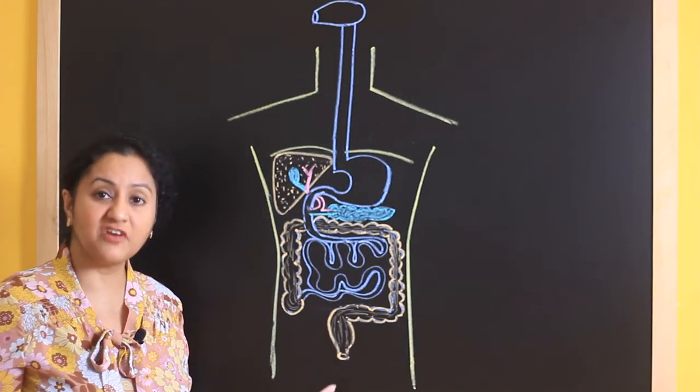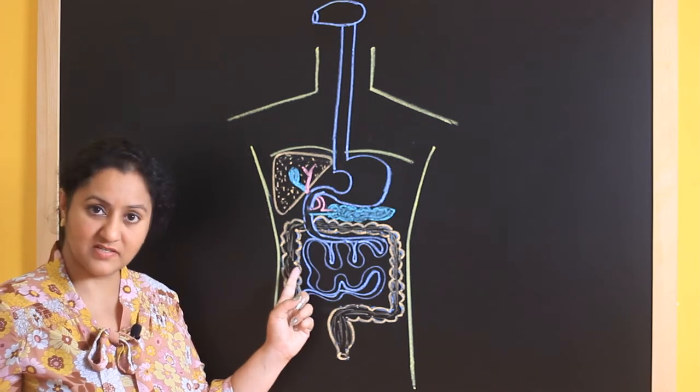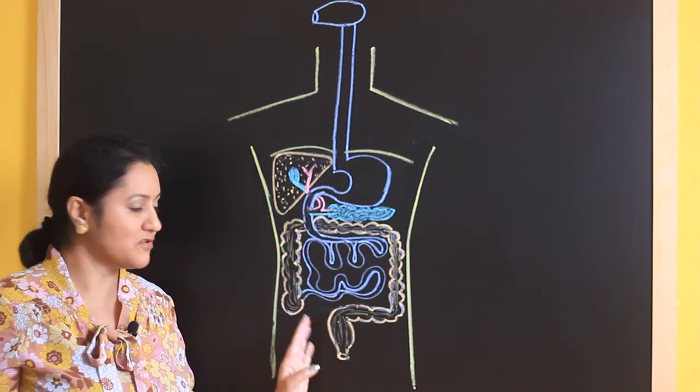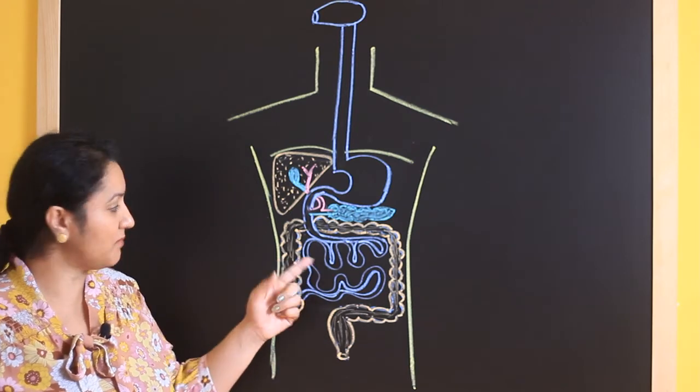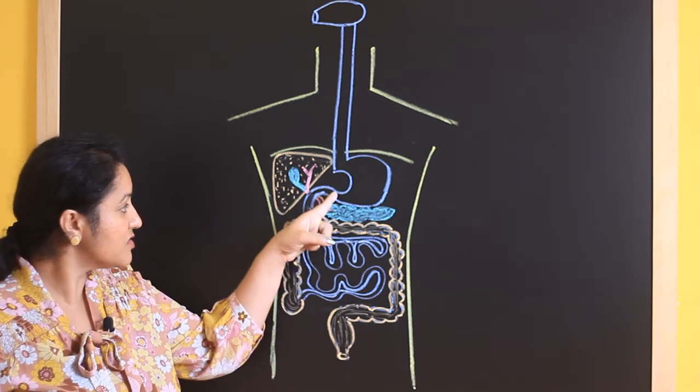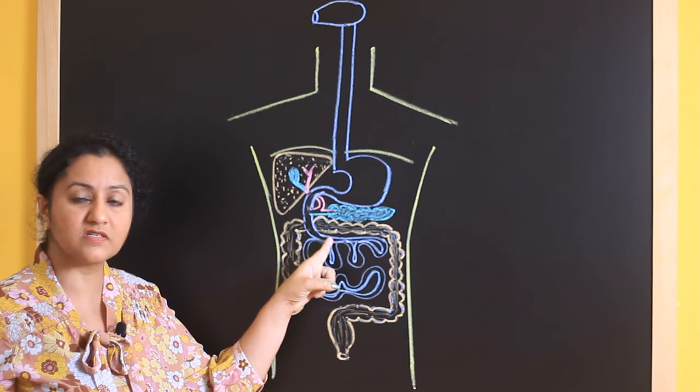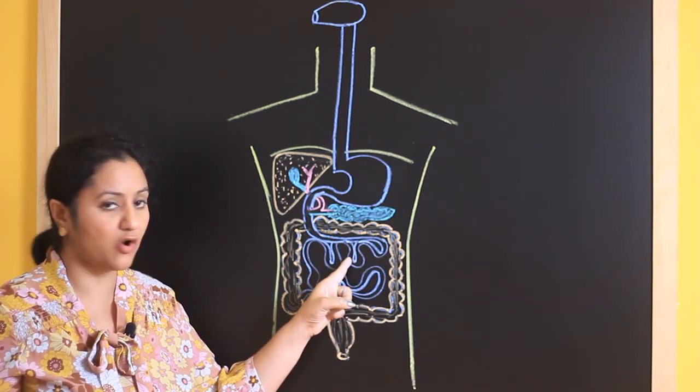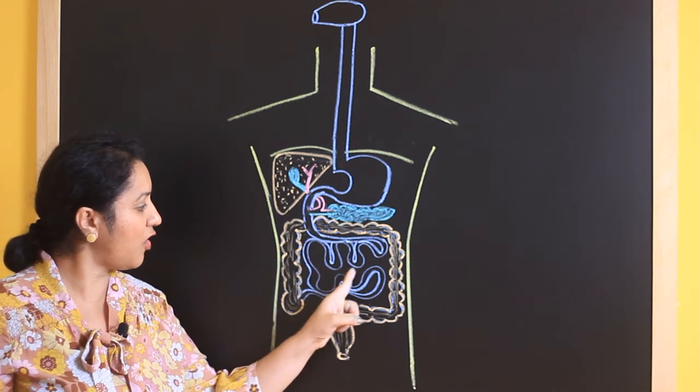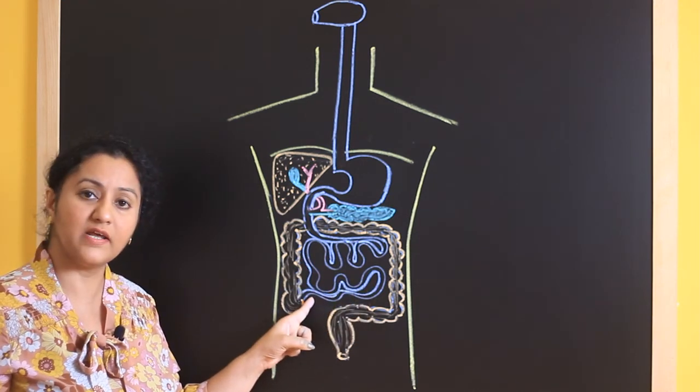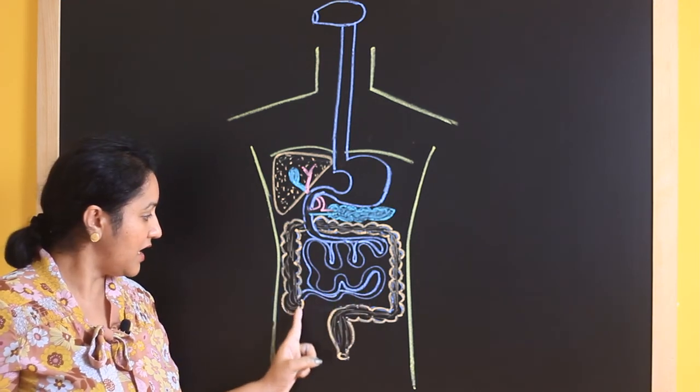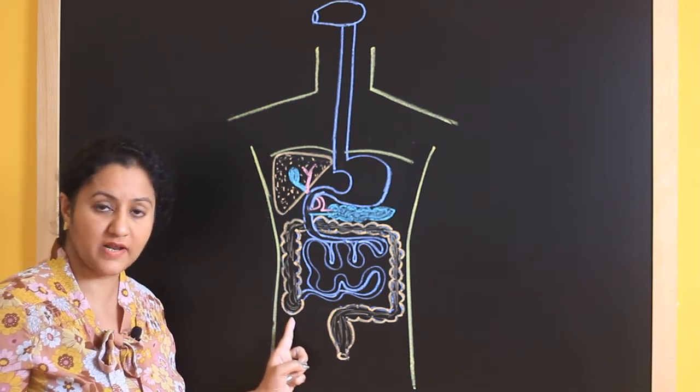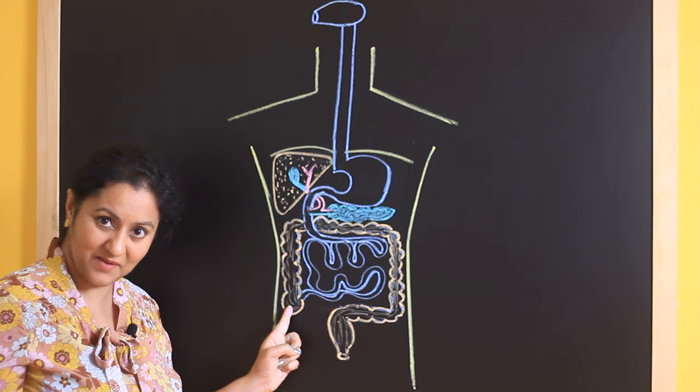For you to differentiate small intestine from large intestine, I have demarcated large intestine with a different color. So it will be very clear. Now let me come back to the parts of small intestine. So this C shaped region of small intestine is called as duodenum. This long coiled tube is called as jejunum and highly coiled tube of small intestine is called as ileum. Now the large intestine starts as I said before. It starts with a pouch like structure which is called as cecum.